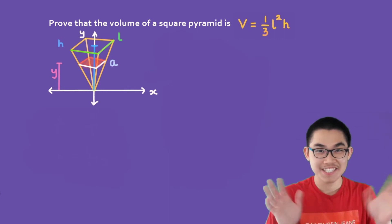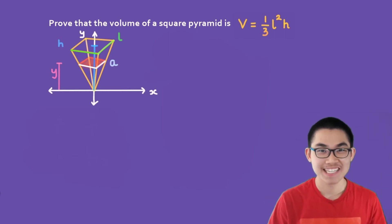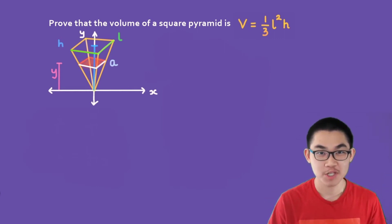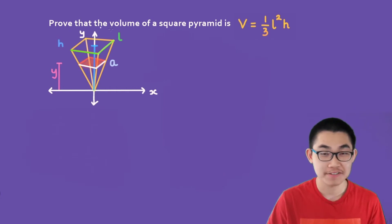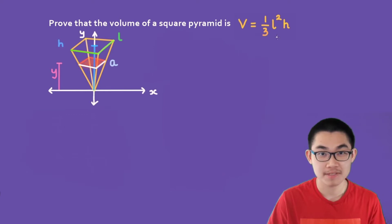Hi friends, welcome back. In this video, I'm going to show you how to prove that the volume of a square pyramid is V equals 1 over 3 times L squared times the height.